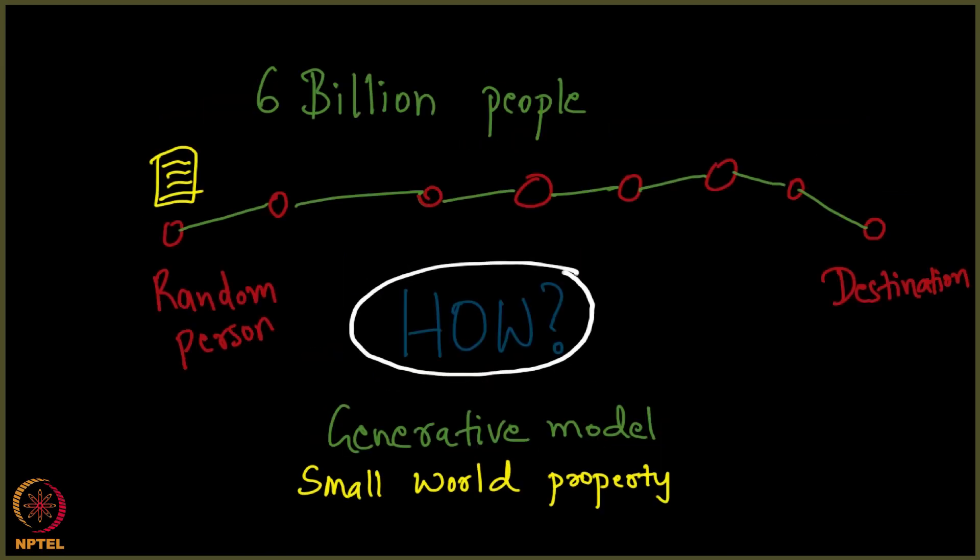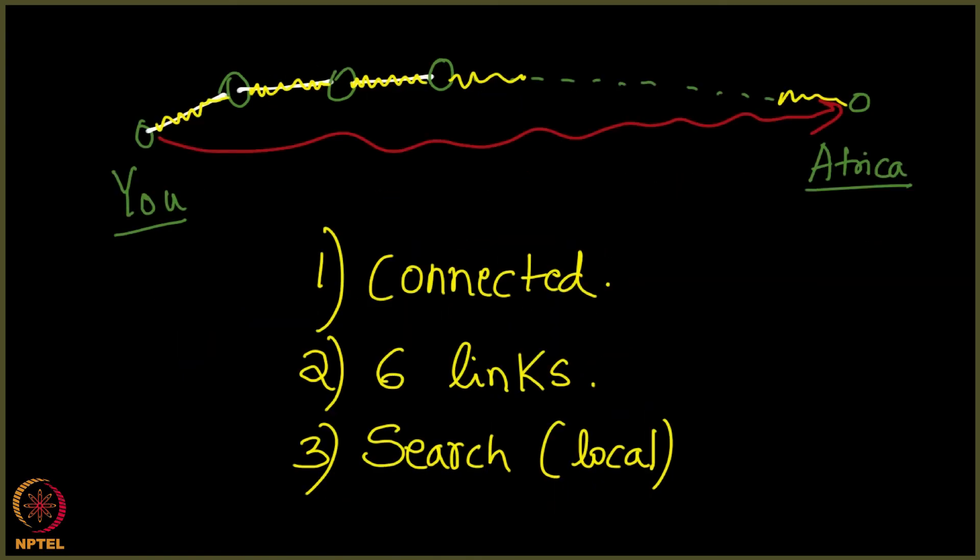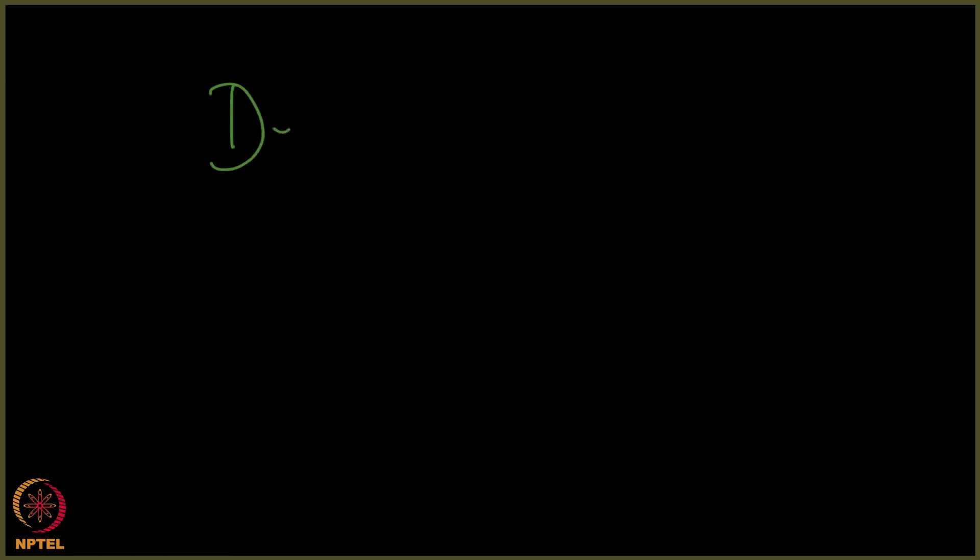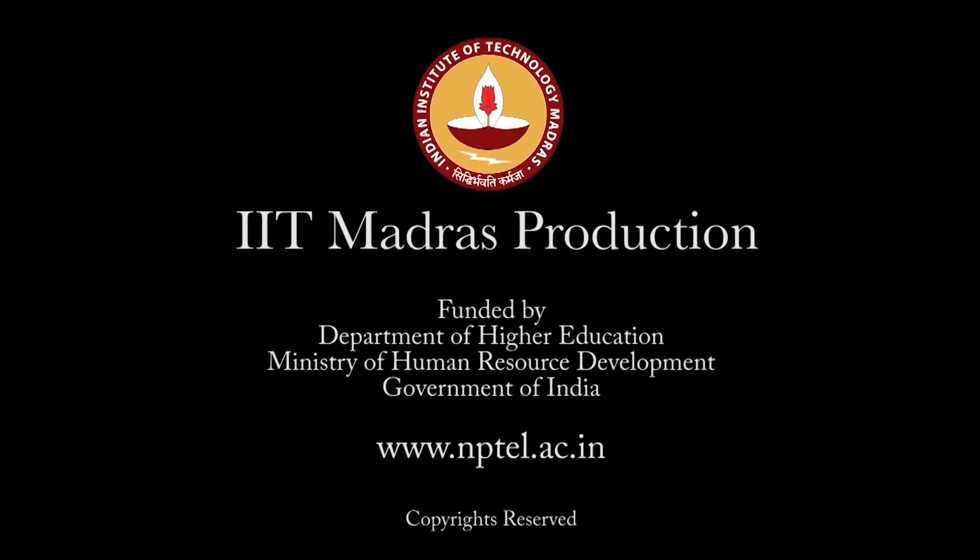Let us now see the how of this algorithm, how exactly this works. This goes by the name decentralized search, and we will see more of it right now. Decentralized search - so it is actually self-explanatory as you would have realized. Centralized means there is a central authority, decentralized means there is no central authority, still you are able to search.